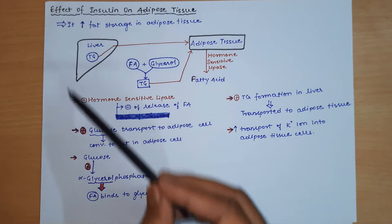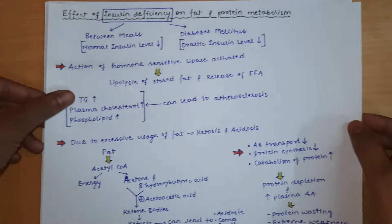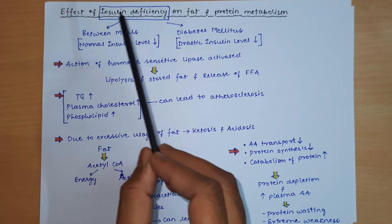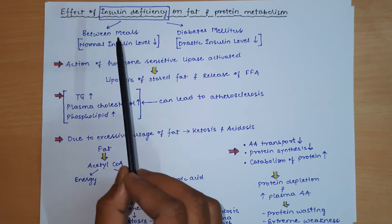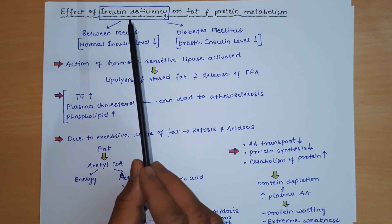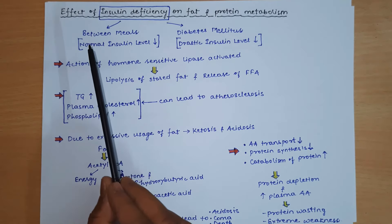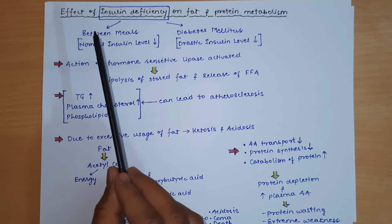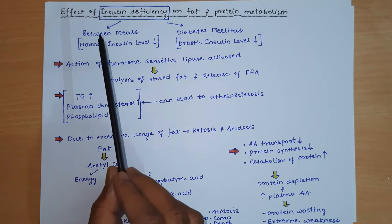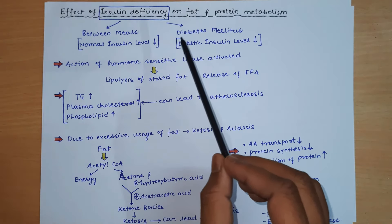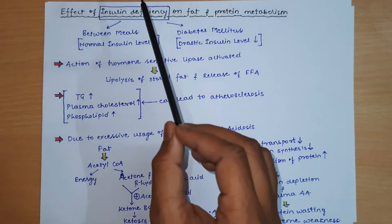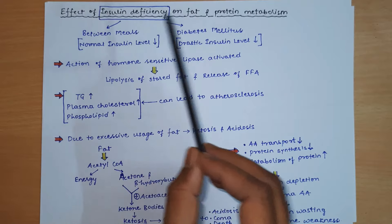The effect of insulin deficiency occurs in two settings: physiologically between meals when insulin levels naturally fall, and pathologically in diabetes mellitus where there is a drastic decrease in insulin levels. Insulin deficiency can significantly affect both fat and protein metabolism.